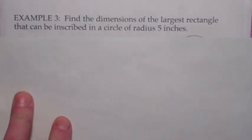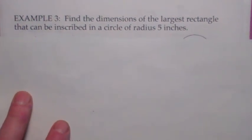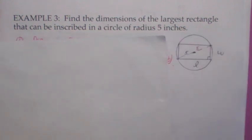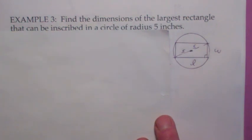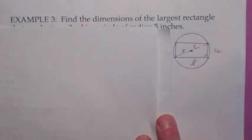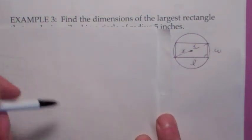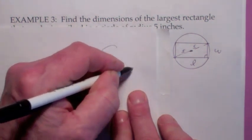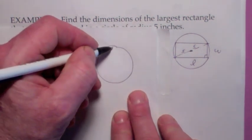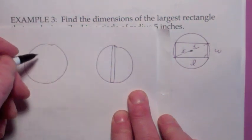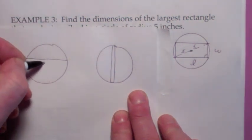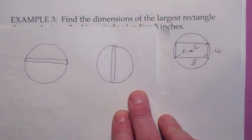In this problem, they want you to find the dimensions of the largest rectangle that can be inscribed in a circle of radius 5 inches. So the picture looks kind of like this. You're drawing the rectangle inside of the circle and the radius of the circle is 5 inches. Notice there's lots of ways you could draw the rectangle inside the circle. The question is how should you draw it to maximize the area?